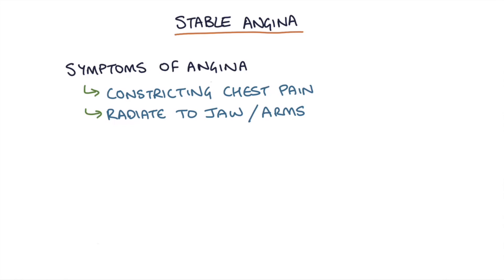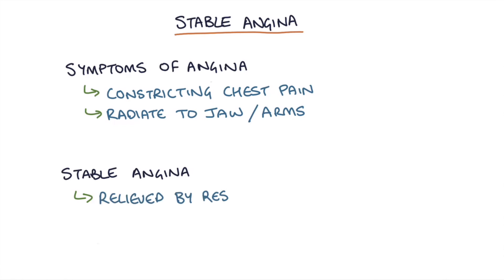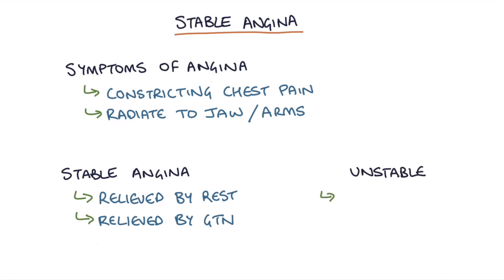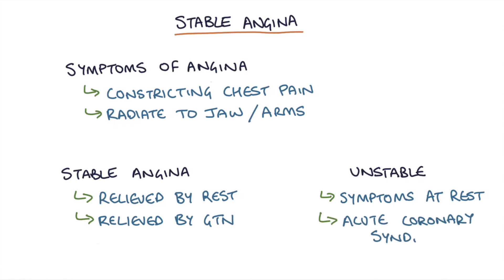Angina is described as stable when these symptoms of chest pain are always relieved by rest or by glyceryl trinitrate (GTN) spray. It's described as unstable when the symptoms come on randomly while at rest, and this is actually considered part of an acute coronary syndrome.